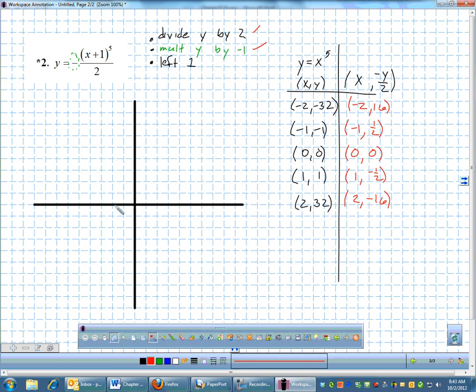So negative 2, 16. Left 1 is way the heck up there somewhere. Negative 1, 1 half. Go left 1. 0, 0. Go left 1. 1, negative 1 half. So 1, negative 1 half. Go left 1. And then 2, negative 16. Go left 1.